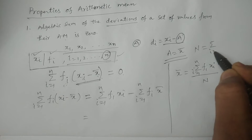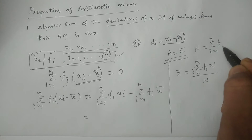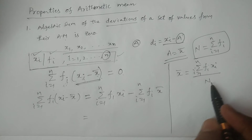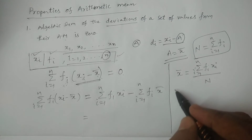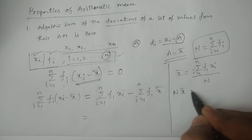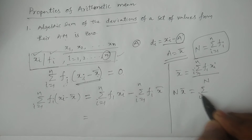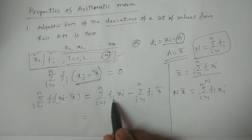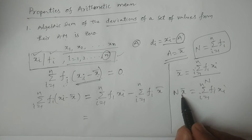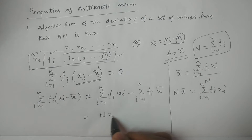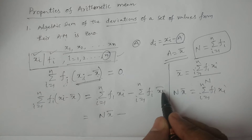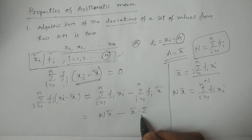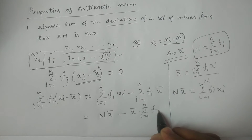Capital N is equal to summation i equal to 1 to n, fi. So if you take capital N to the left hand side, then N into x̄ is equal to summation i equal to 1 to n, fi xi. So summation fi xi equals N into x̄. Therefore, I am writing N into x̄, minus x̄ taken outside, x̄ into summation i equal to 1 to n, fi.